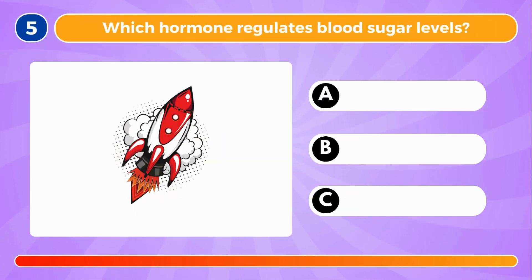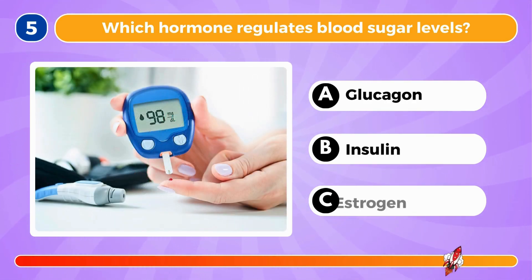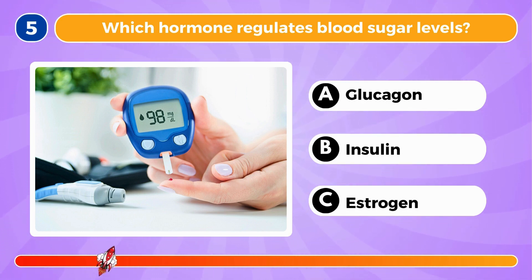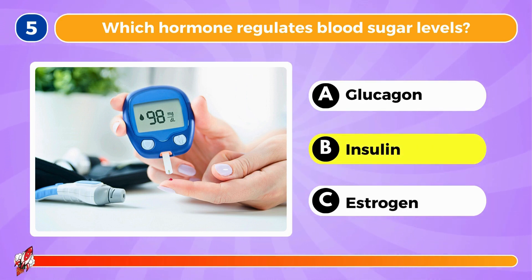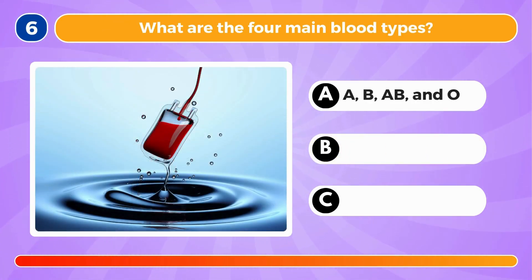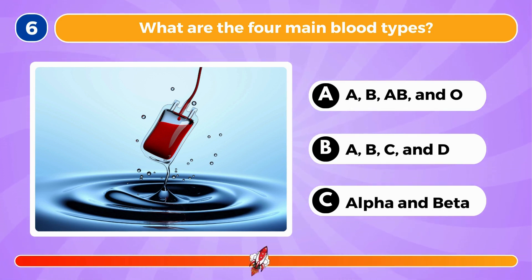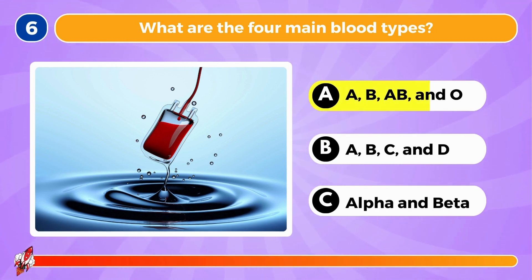Which hormone regulates blood sugar levels? It's insulin. What are the four main blood types? The main blood types are A, B, AB, and O.